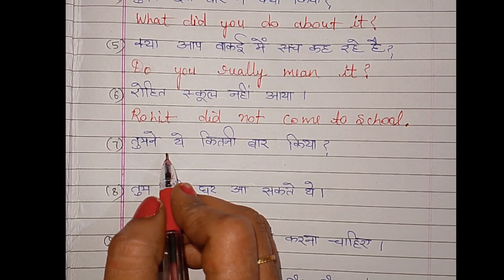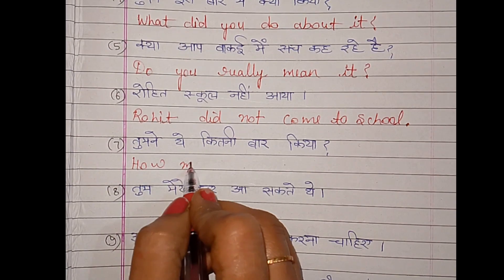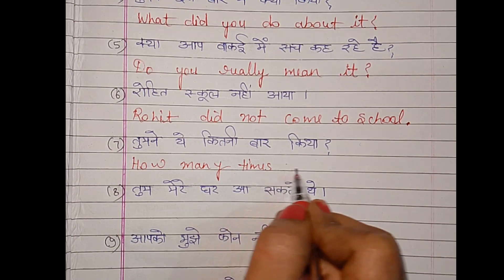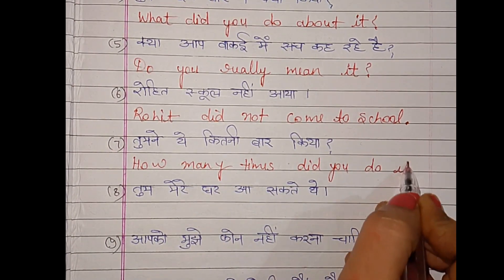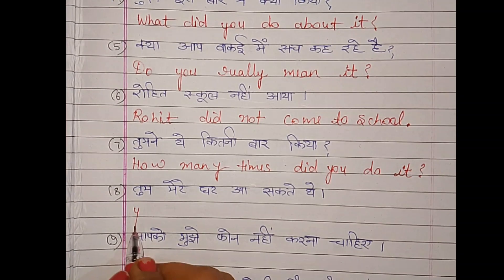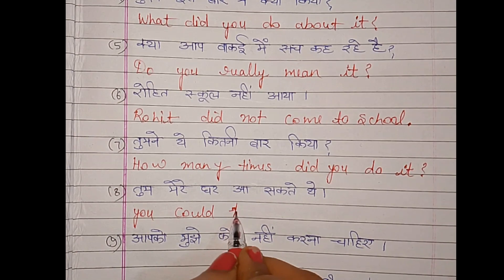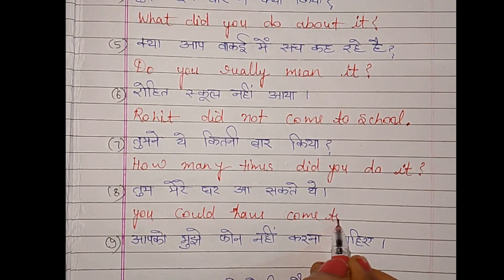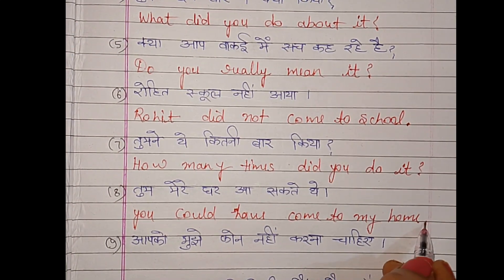तुमने ये कितनी बार किया? तुम मेरे घर आ सकते थे। You could have come to my home.